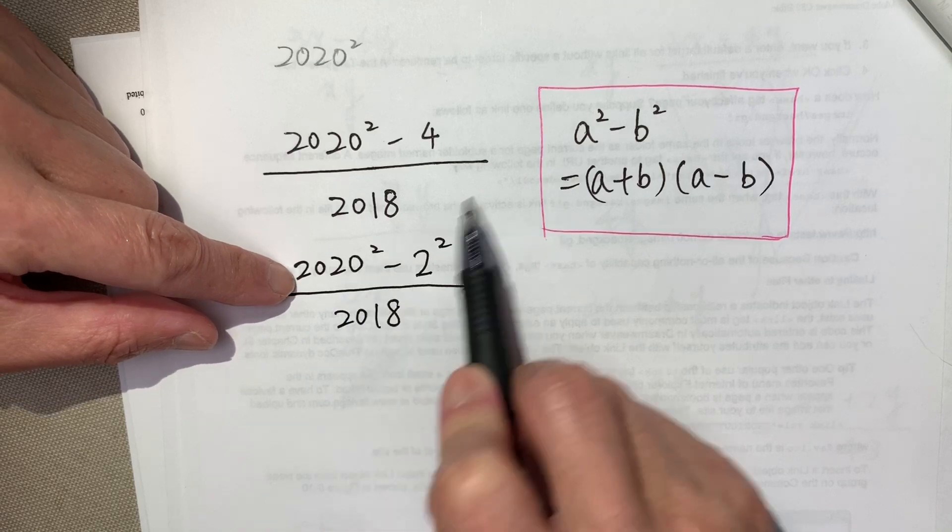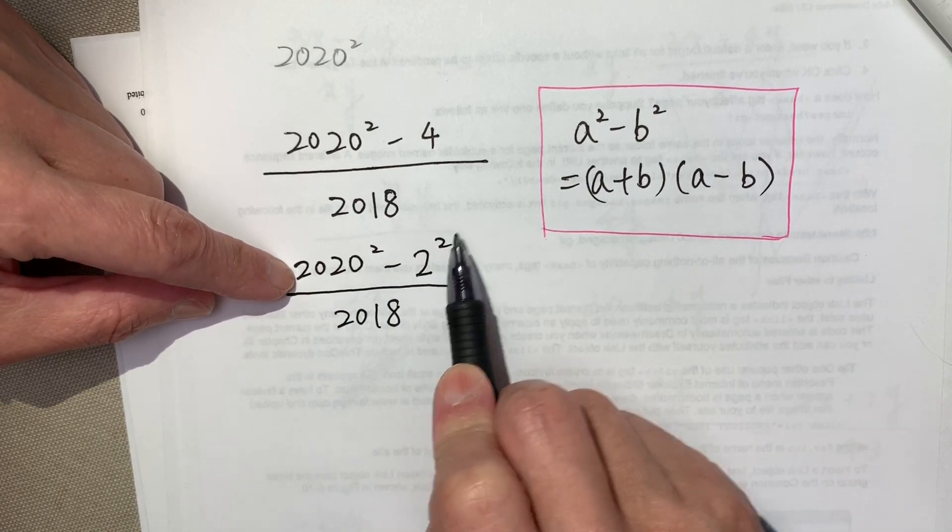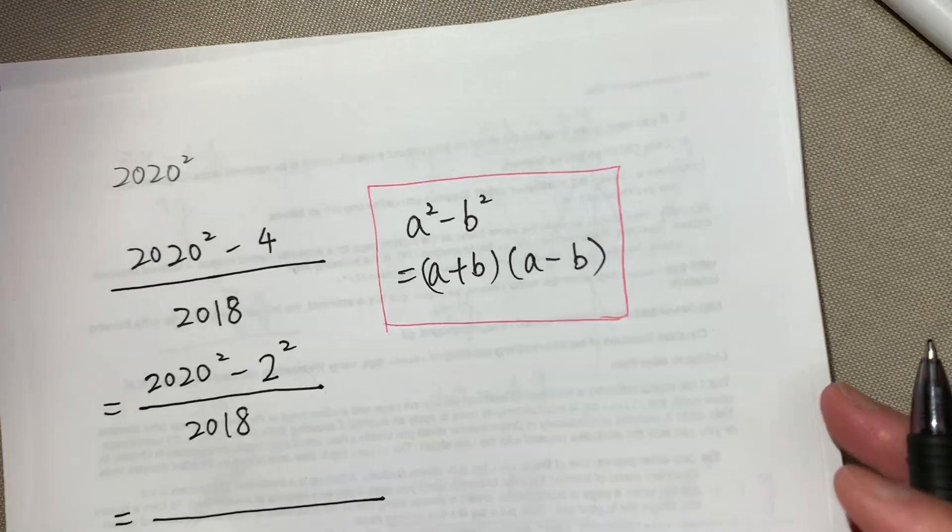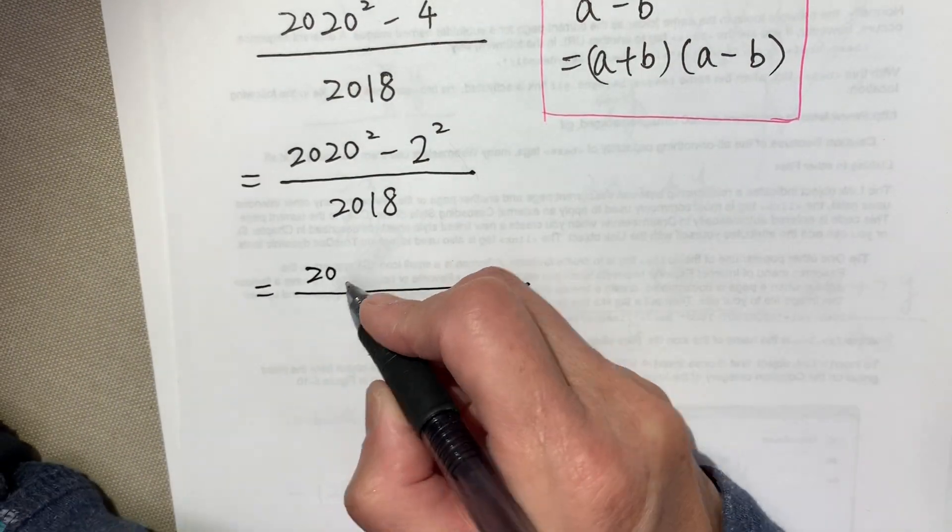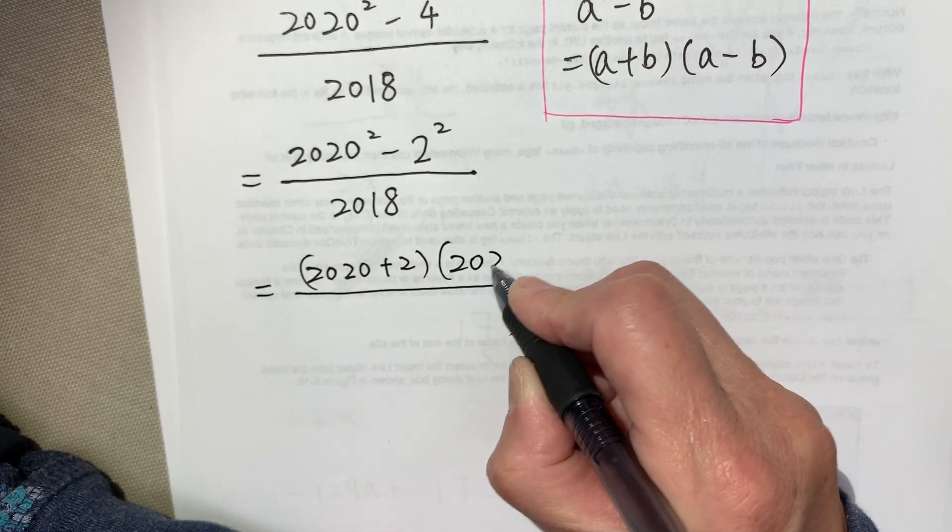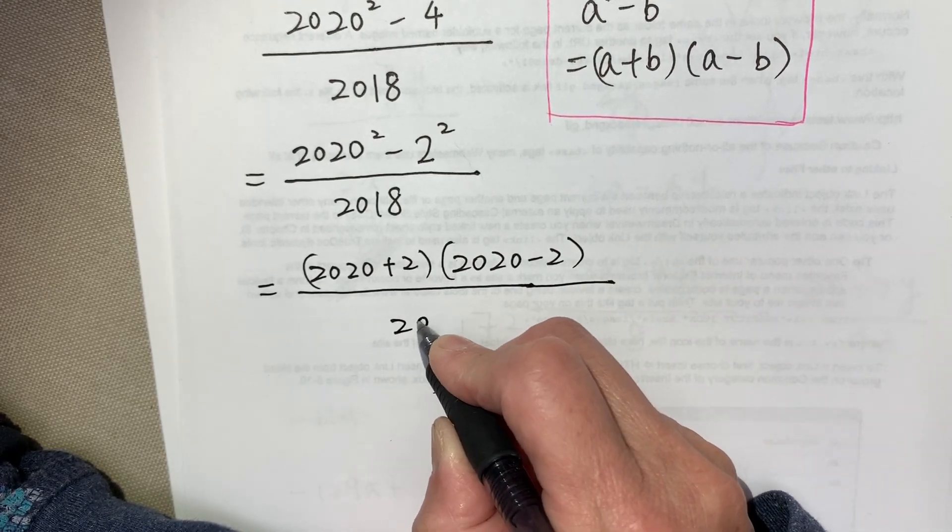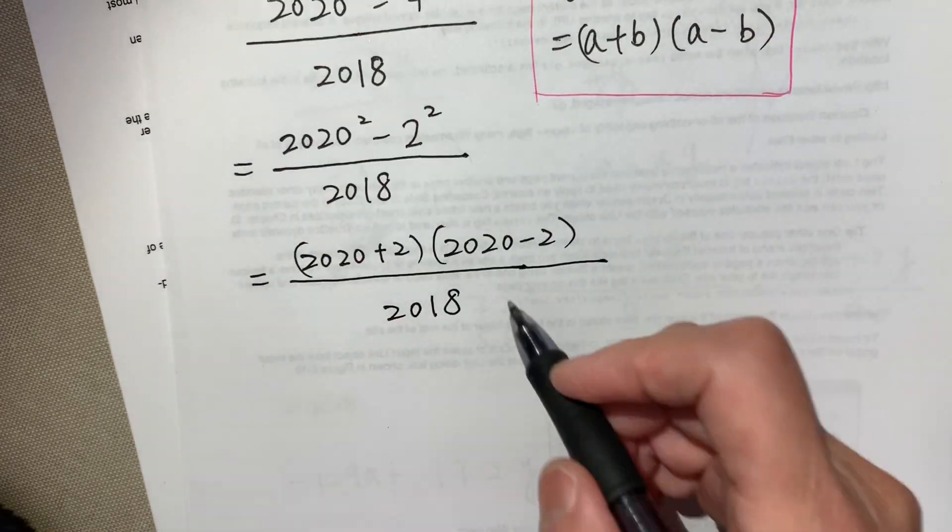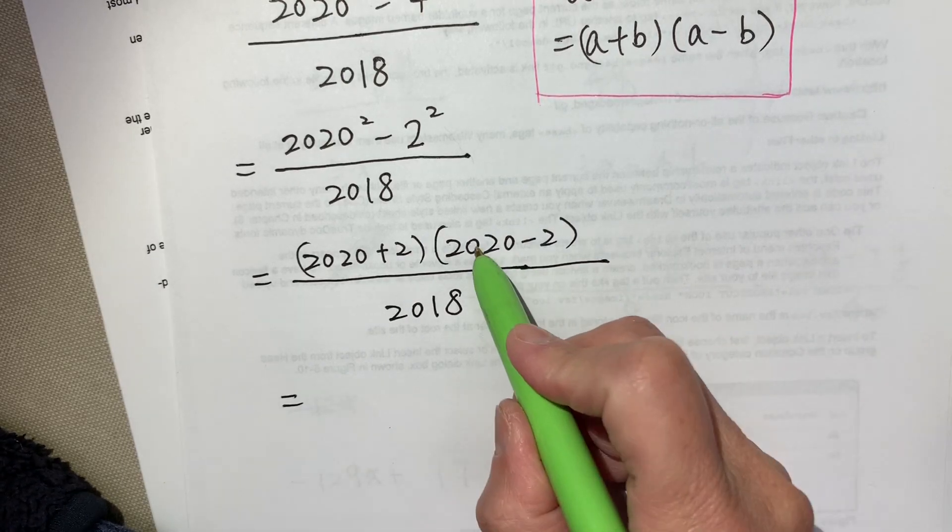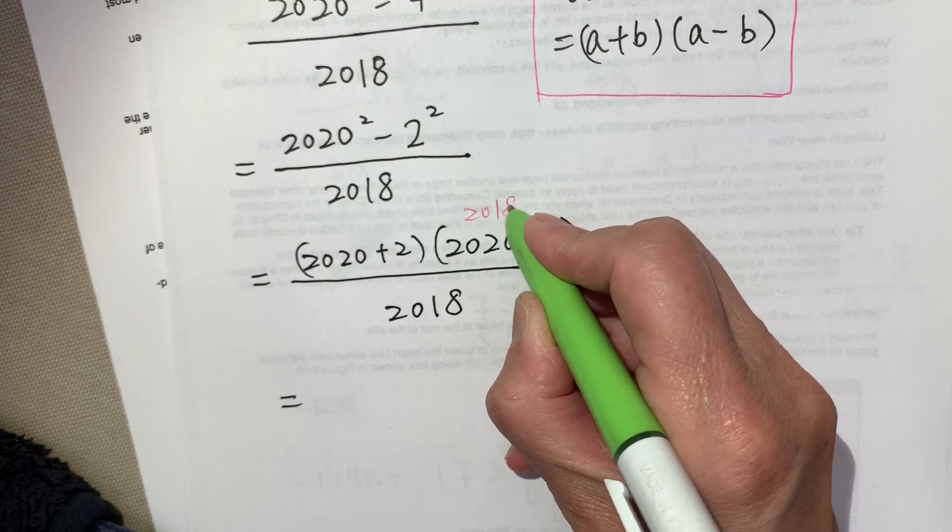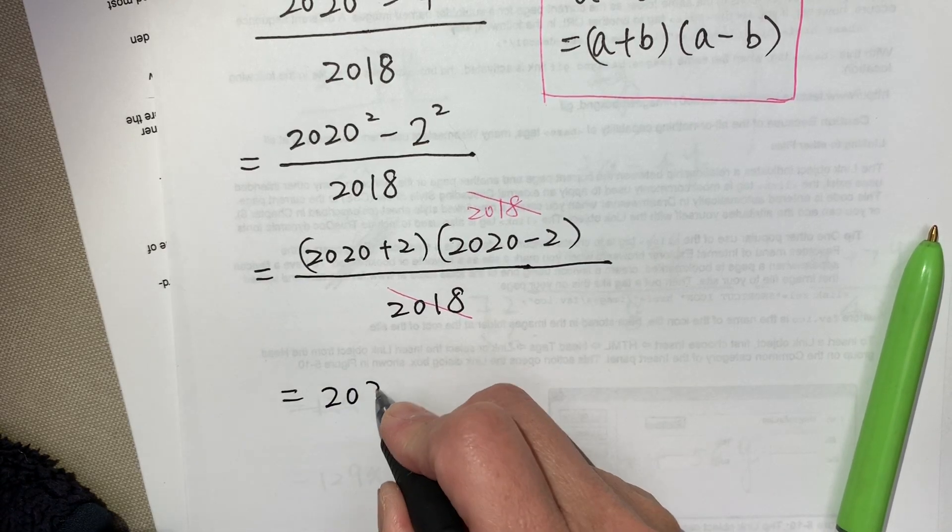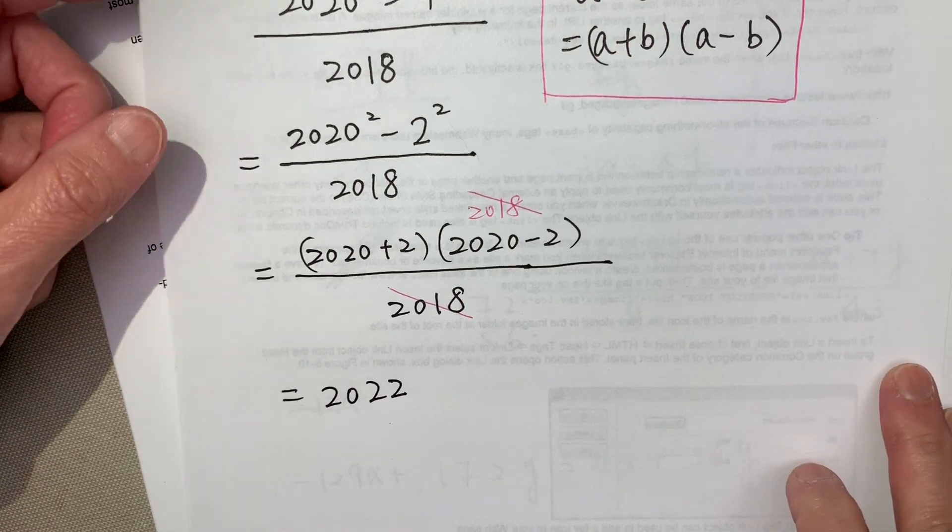Now we can see 2020 squared, A squared, minus 2 squared, minus B squared. So the upper part, we can dismantle it into 2020 plus 2 times 2020 minus 2 over 2018. This is 2018, and we can cross-cancel. The result is 2022. That is the result.